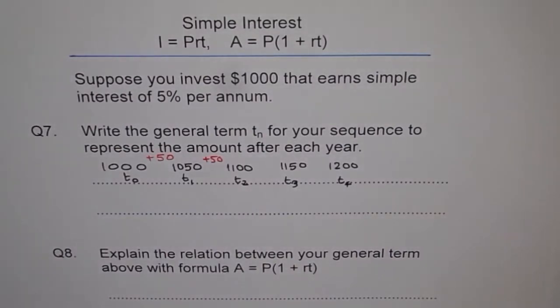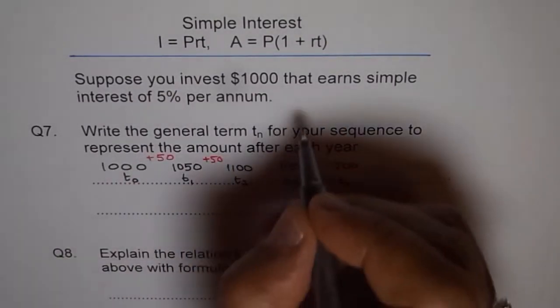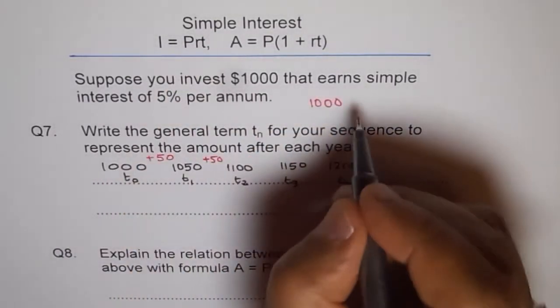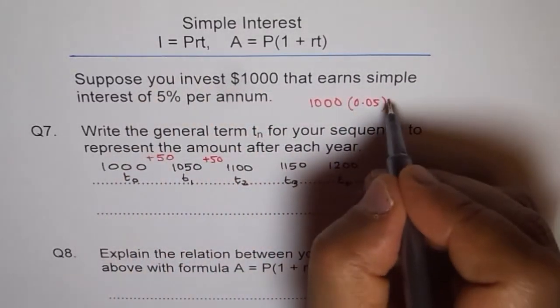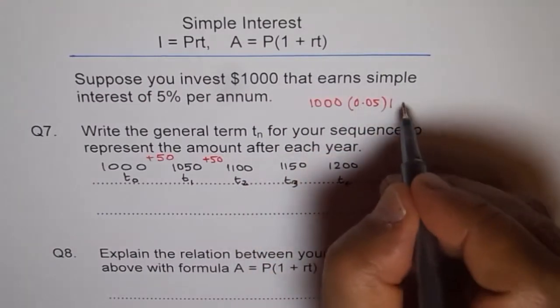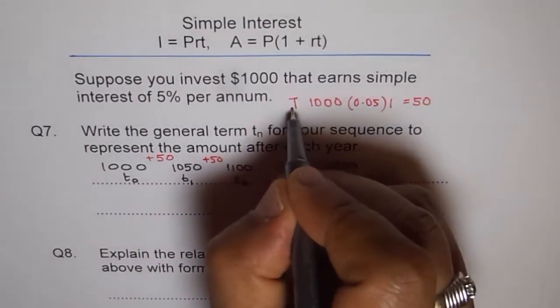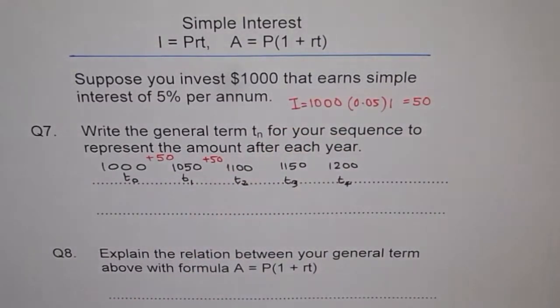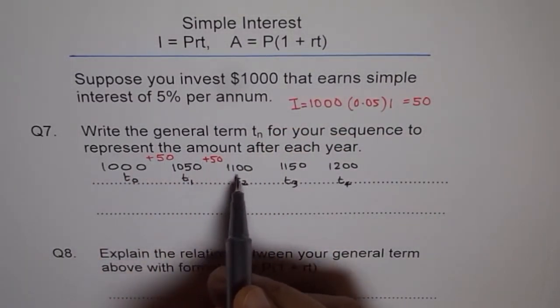And as we calculated earlier, P is $1000. So 1000 into r is 0.05. Let me do it again. 1000 is P, times r, which is 0.05, and time of one year. So 1000 × 0.05 gives us $50. And this is the interest which is being earned every year. So the amount increases by that amount every year.